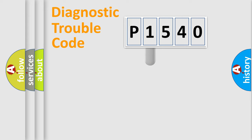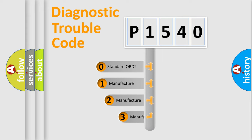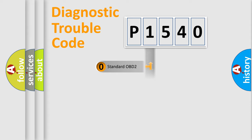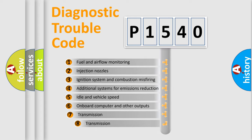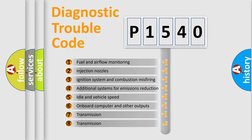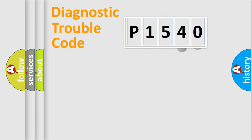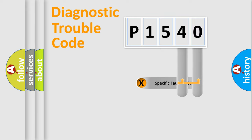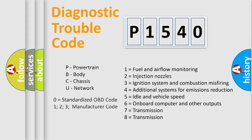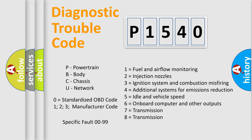This distribution is defined in the first character of the code. If the second character is expressed as zero, it is a standardized error. In the case of numbers 1, 2, or 3, it is a more specific, car-specific error expression. The third character specifies a subset of errors. This division is valid only for the standardized DTC code, and only the last two characters define the specific fault of the group.